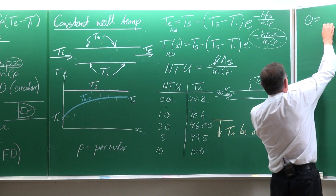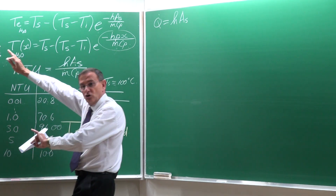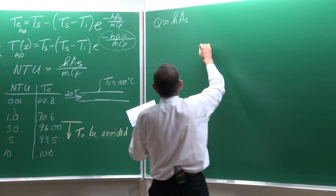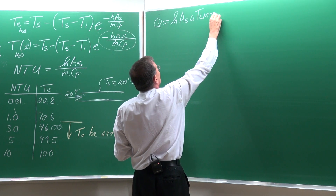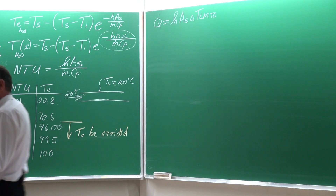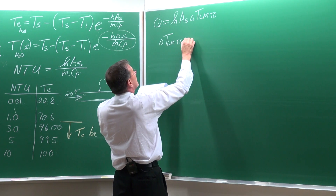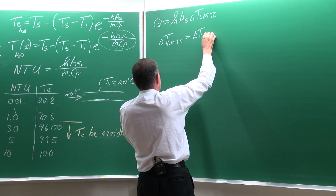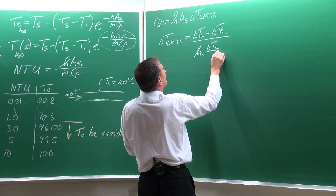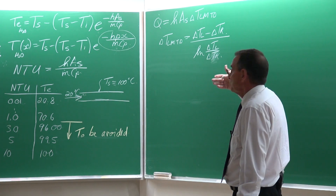Now something different for the constant wall temperature case is that the heat transfer rate can be written as the heat transfer coefficient multiplied by the surface area multiplied by the LMTD — the Log Mean Temperature Difference — and not simply a single temperature difference as before. The LMTD is equal to delta-T on the left-hand side minus delta-T on the right-hand side, divided by the natural log of delta-T left over delta-T right.